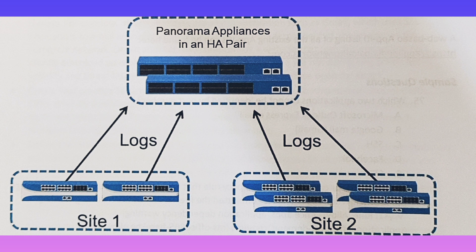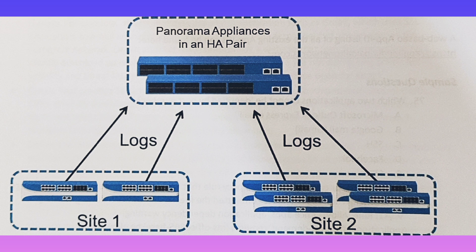Logs are forwarded to the Panorama appliances in an HA pair. The secondary Panorama appliance in an HA can be used to store logs as well. If you see on screen, there are two sites which are forwarding logs to the Panorama HA. In an HA pair, when both the Panorama VMs are operating in Panorama mode, the same log from the firewalls is sent to the active and passive Panorama appliances. Therefore, the log is replicated between the active and the passive appliances of the HA pair. This deployment option is recommended if the firewalls generate up to 10,000 logs per second.